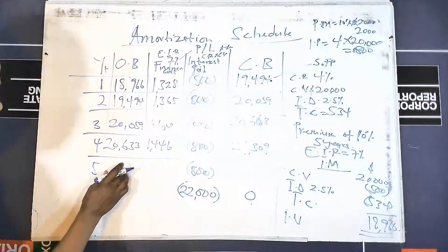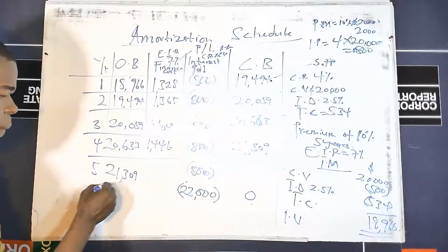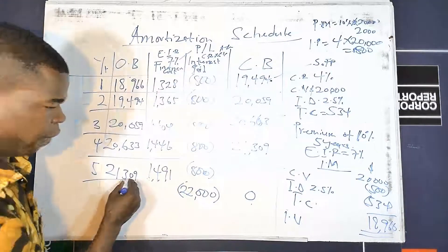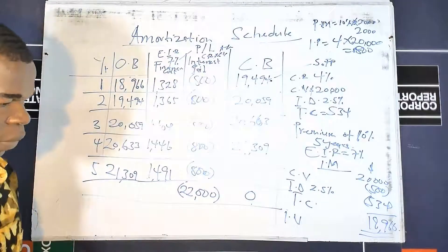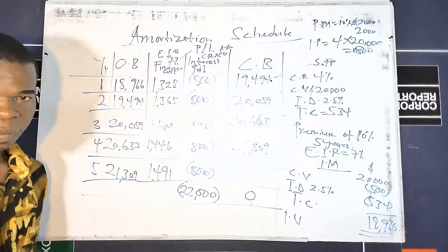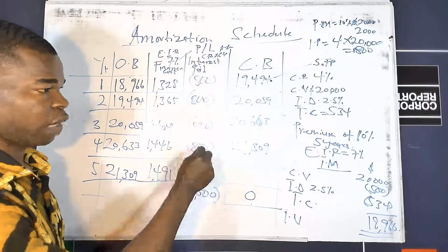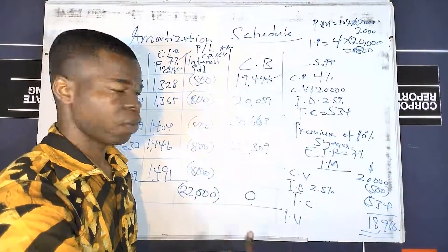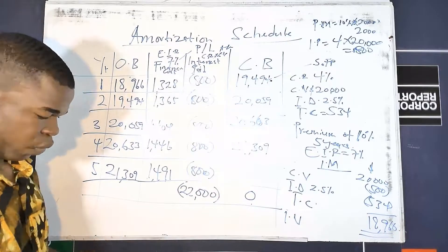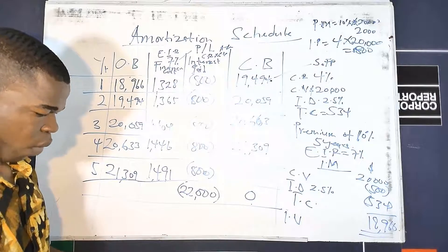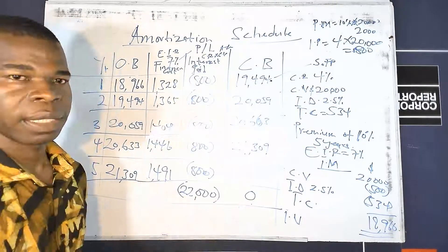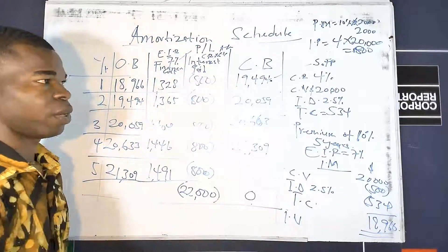Year 5 — opening $21,309; finance cost: 7% × $21,309 = $1,491. Add opening plus finance cost, less $800 interest paid: 21,309 + 1,491 − 800 = $22,000, which is the redeem value. Less the redeem value of $22,000 gives a closing balance of zero. This confirms our redeem value calculation. If the redeem value had not been given, you could determine it from this final year calculation.